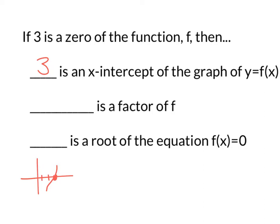When we think about the function as an equation, we know that x minus 3 would have to be a factor of f, because when I plug 3 in, I'll have 3 minus 3 equals 0. So one of the factors has to be 0 in order to make the entire function equal to 0. A root of the equation would be a solution of f of x equals 0, so x equals 3 would solve the equation f of x equals 0.